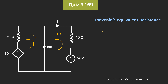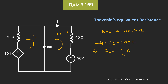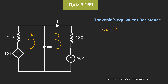Similarly, applying KVL in the second mesh, we can write: −40 times I2 − 50 = 0. That means I2 = −5/4 A. Earlier we found that I2 = 2I1, so I1 = I2 divided by 2, which equals −5/8 A. The short-circuit current Isc equals I1 − I2, which is −5/8 − (−5/4), giving us Isc = 5/8 A.